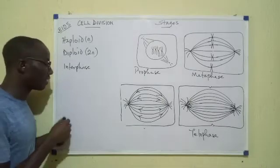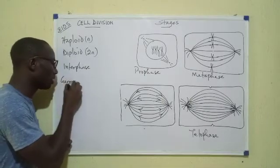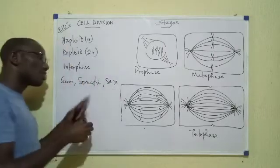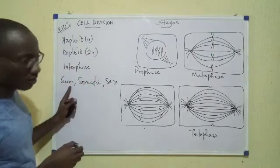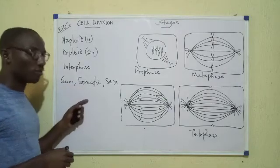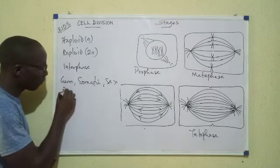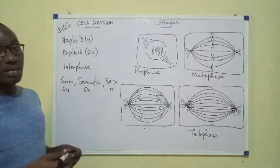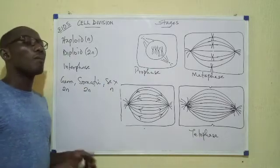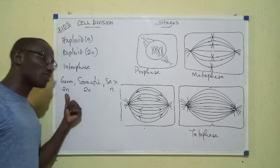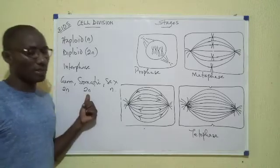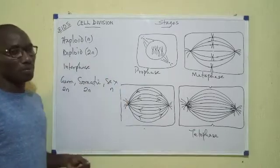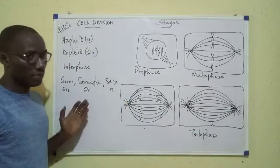Now, you remember we said there are three types of cells: germ cells, somatic cells, and sex cells. The sex cells come from the germ cells. Somatic cells produce fellow somatic cells. We say germ cells are diploid, somatic cells are diploid, but sex cells are haploid. What does that mean? It means that the number of chromosomes in a germ cell is the same as in a somatic cell, but a sex cell contains half of that number. That's the relationship between them.